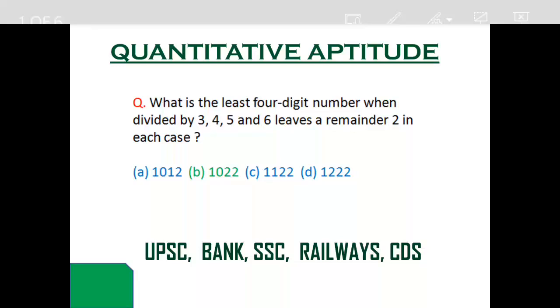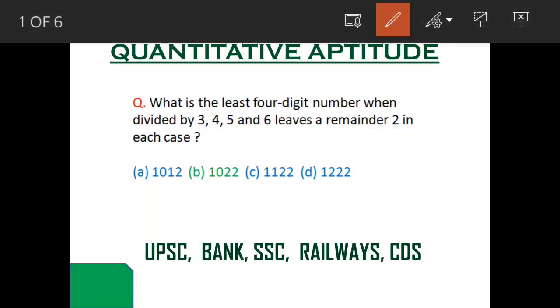We'll see a question on division and remainders. The question is: what is the least four-digit number when divided by the four numbers given leaves a remainder of two in each case? The answer is option B, so we'll see how to solve this question.